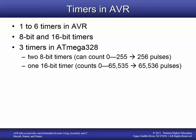In AVR microcontrollers, there are different numbers of timers — anywhere from one to six timer counters — and they can be either 8-bit or 16-bit timers. In the microcontroller we're using, there are three timers: two 8-bit timers that count from 0 to 255 (256 pulses), and one 16-bit timer that can count 65,536 pulses. They behave in much the same way; they just have different capacities.